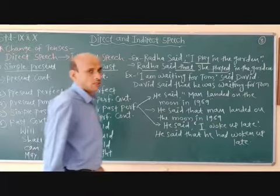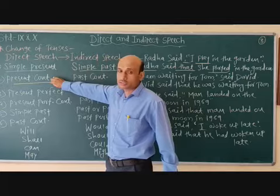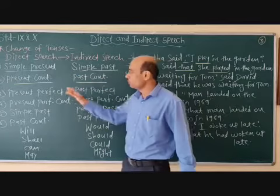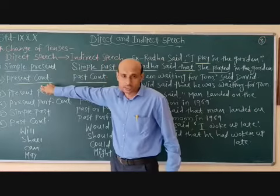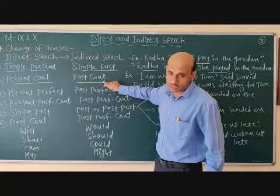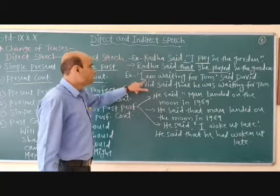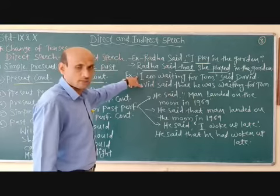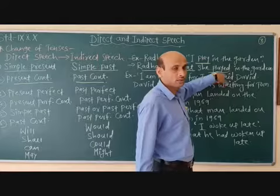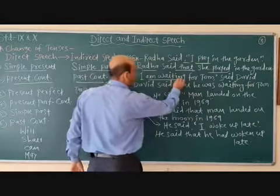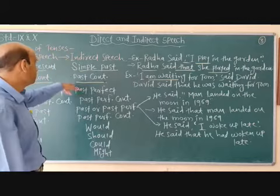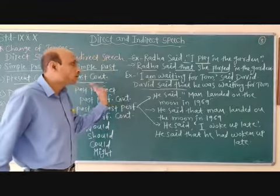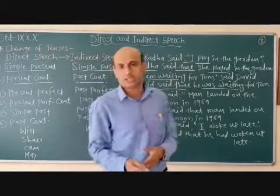Coming to the next one: present continuous tense. If the direct sentence is in present continuous tense, so the indirect will be in past continuous tense. For example, "I am waiting for Tom," said Devin. The tense is present continuous. So in indirect speech: Devin said that he was waiting for Tom. 'Was waiting' — past continuous.